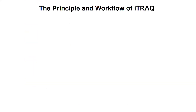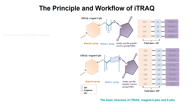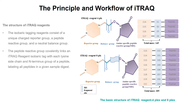Speaking to the principle of iTRAQ, we should know the structure of iTRAQ reagents. The isobaric tagging reagents consist of a unique charged reporter group, a peptide reactive group, and a neutral balance group. The peptide reactive group covalently links an iTRAQ reagent isobaric tag with each lysine side chain and N-terminus group of a peptide, labeling all peptides in a given sample digest.